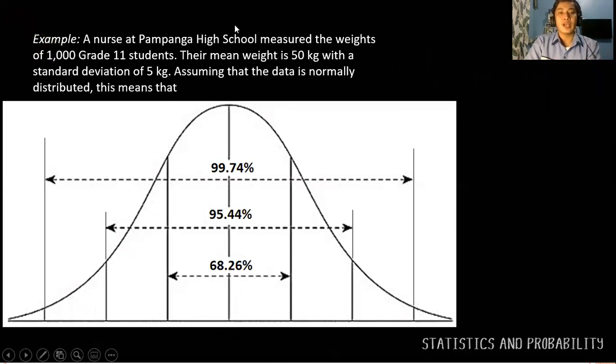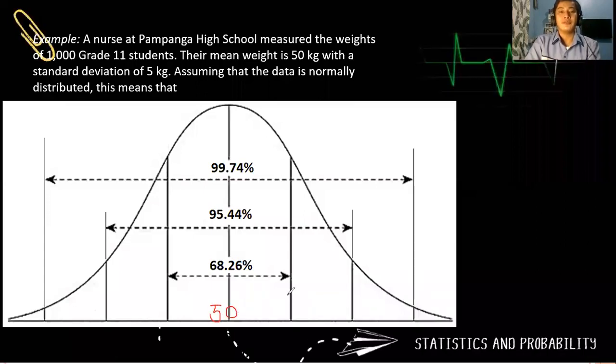Meaning there are 997 students which are between these means or this distribution. If, for example, our mean is 50, so this is 50 and our standard deviation is 5 kilograms. So meaning we have 55, 60, and 65. Then we have 45, 40, and 35.